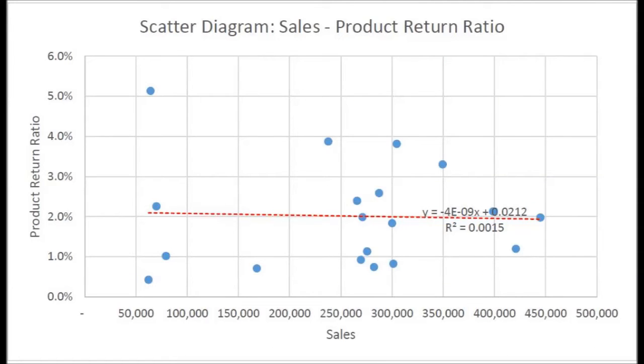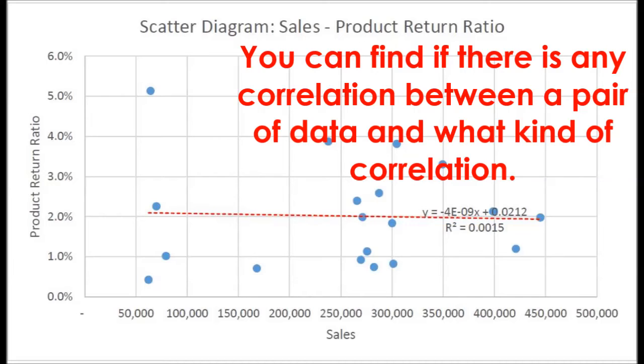This is a scatter diagram. You can find if there is any correlation between a pair of data and what kind of correlation.